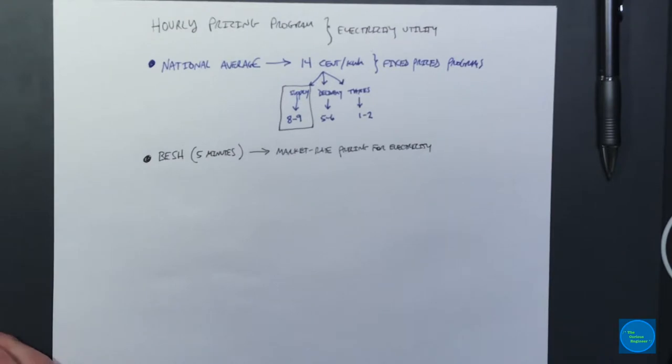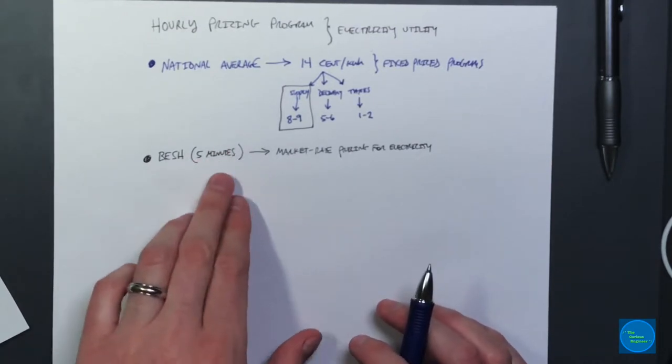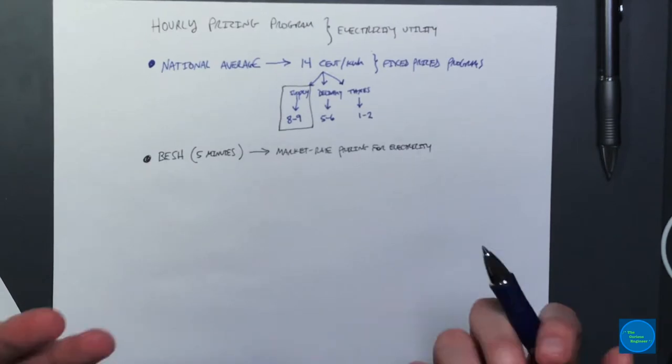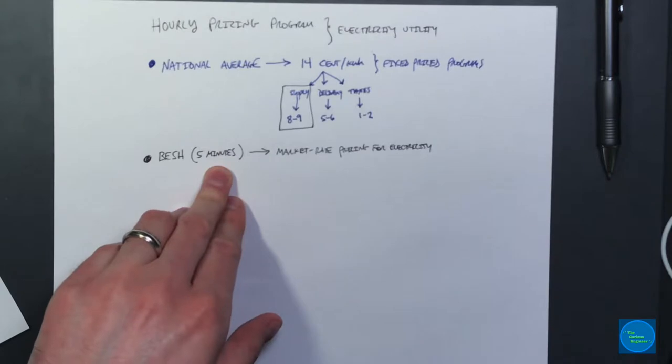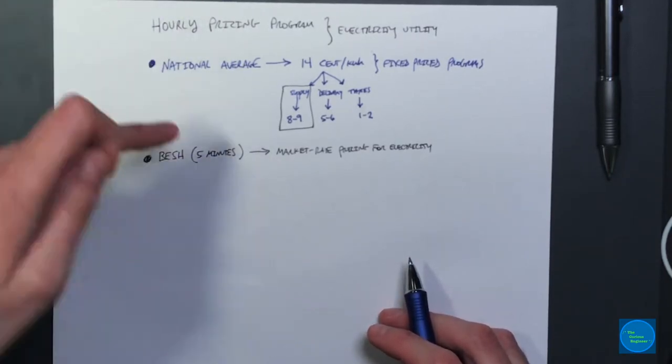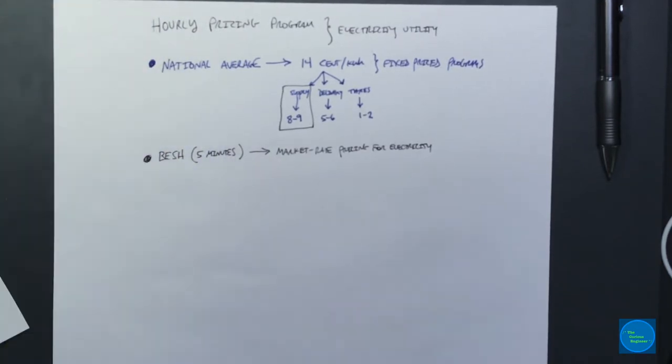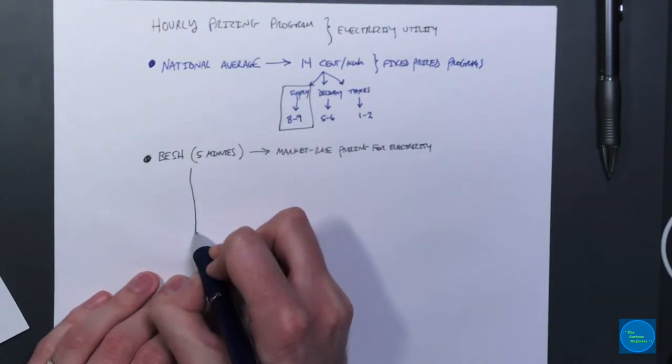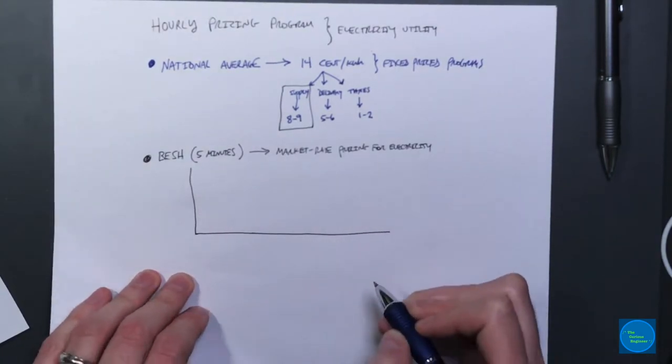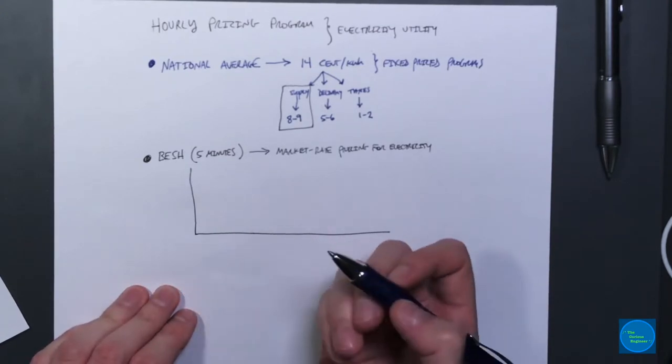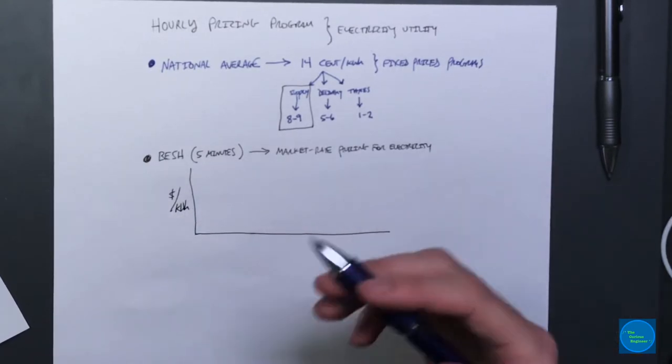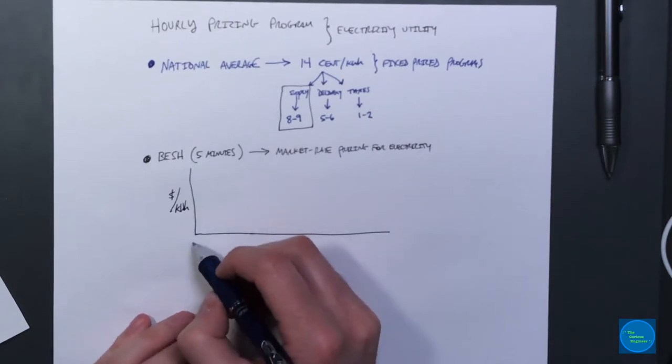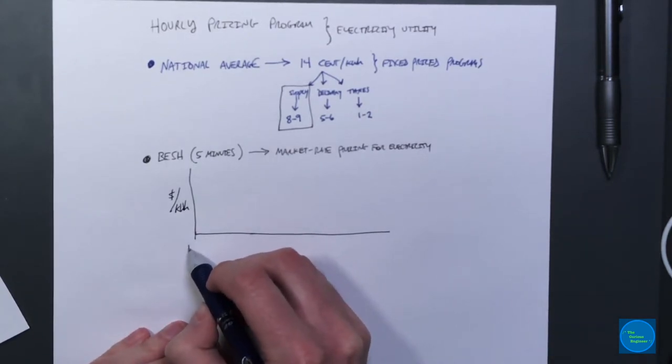What you end up with is a situation that looks more like this. The technical term is called BESH, which is updated every five minutes. This basically is the market rate pricing for electricity. The hourly pricing program, as the name implies, doesn't focus on those updates every five minutes. You're not being billed for whatever the price is as it fluctuates every five minutes. You get billed based on what the pricing is per hour.